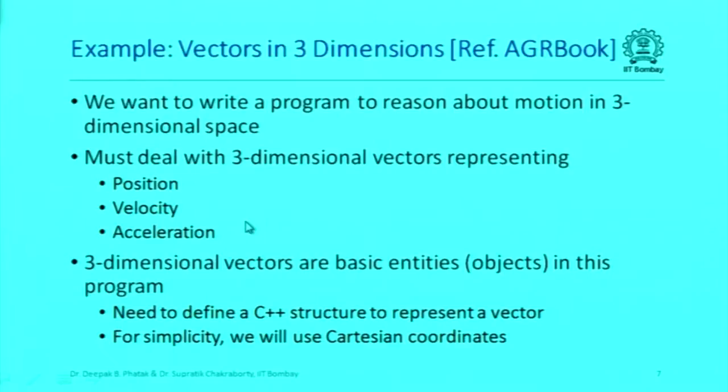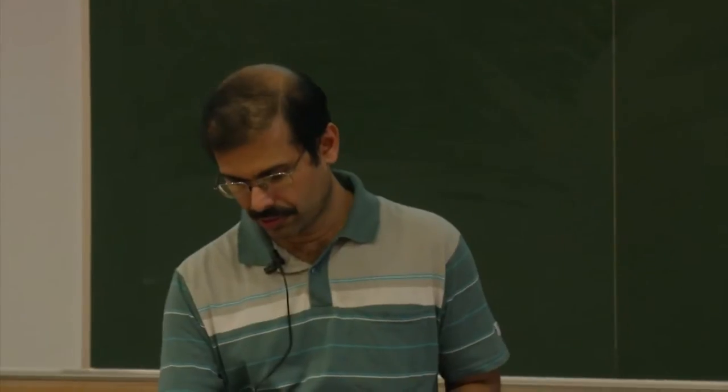In order to illustrate that, we're going to take this example where we want to write a program to reason about motion in three-dimensional space. So we're going to have three-dimensional vectors representing position, velocity, acceleration and similar things. We'll have a three-dimensional vector as a basic object. We want to have a structure for it and then see how to define functions which operate on these three-dimensional vectors. A three-dimensional vector can be represented in several ways: Cartesian, spherical, or cylindrical coordinate systems. For simplicity we will use the Cartesian coordinate system, but later we'll see that it's not too much overhead to move from one representation to another.